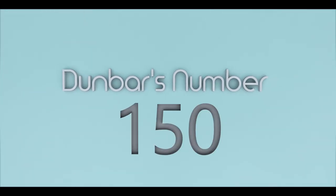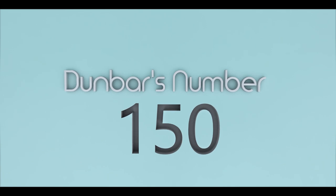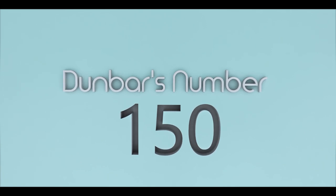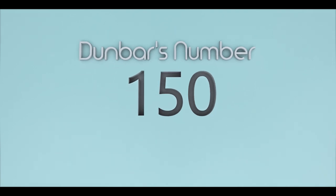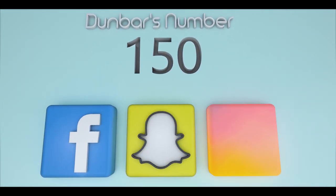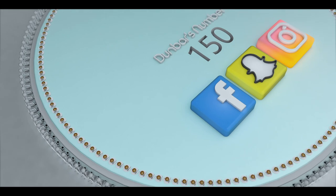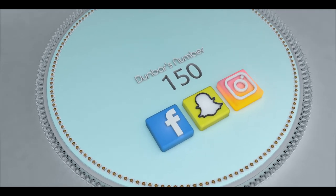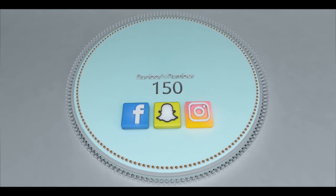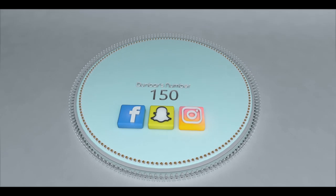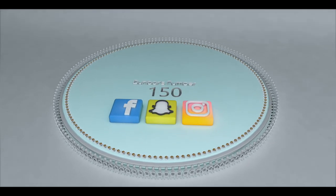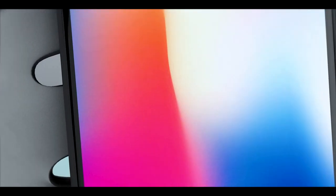Dunbar's number is said to represent the maximum number of relationships we can maintain at any given time. Now, 150 people may seem pretty small when you compare it to all of the Facebook friends you may have, or all of the Instagram followers your account has accumulated. But consider what it would be like sitting at a table eating dinner with the 150 people that you know the best. So the question that must be asked is if we can't properly maintain more than 150 relationships in real life, why would we be able to online?